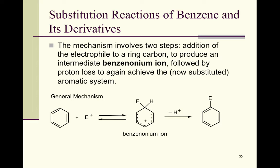Electrophilic substitution reactions occur on aromatic compounds other than benzene and are a good test for aromaticity. Looking at the substitution reaction of benzene and derivatives, the mechanism involves two steps: first, the addition of the electrophile to the carbon ring to produce an intermediate ion, followed by the loss of a proton to achieve the now-substituted aromatic system.